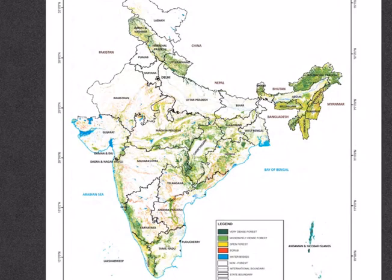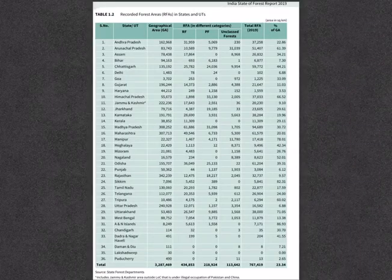As per the map, very dense forest, moderately dense forest, and open forest are not uniformly distributed across India. They are mainly concentrated in the middle Himalayan states — Jammu & Kashmir, Himachal Pradesh, Uttarakhand, and Sikkim — and most of the northeastern part. A few parts in central India are also covered, and almost the whole of the western coast is covered with these kinds of forests.